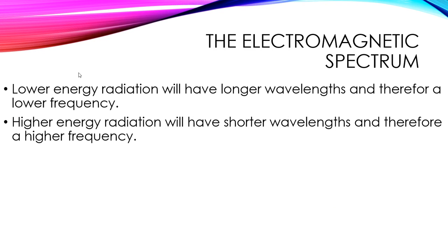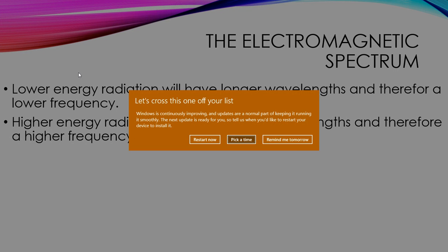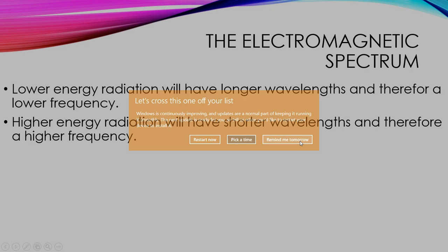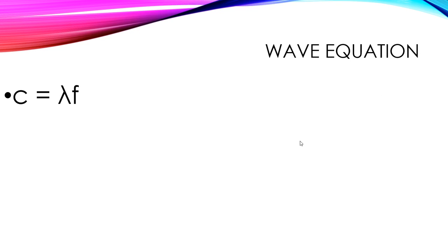To summarize: lower energy waves have longer wavelengths and therefore lower frequency — that's why radio waves can pass through you right now without causing any issues. As we get into higher energy, that means shorter wavelength and higher frequency, and things like gamma rays have that higher energy and are more dangerous.